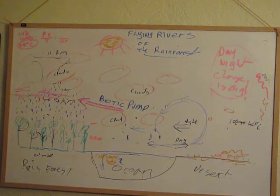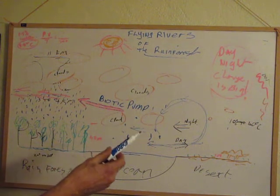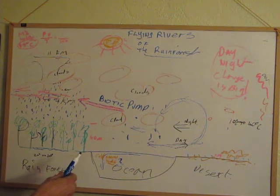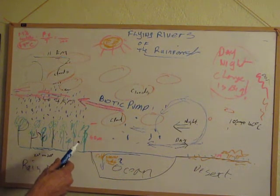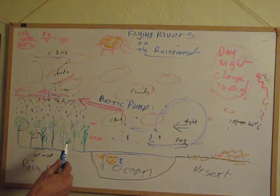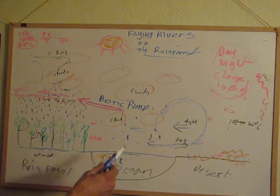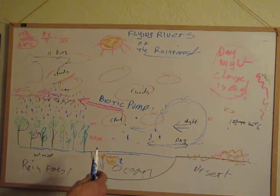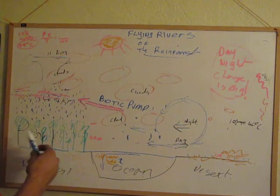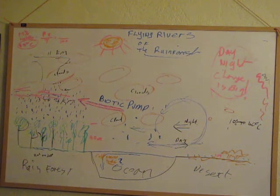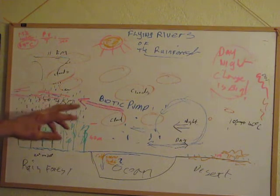Over the forest it's an entirely different thing. The rainforest, 40 metres high, has eight times the capacity to transpire water as the ocean has to evaporate. So over the forest, it's able to send water vapour up into the air eight times quicker than the ocean can. This means that over the forest during the day there's a little bit lower pressure than over the ocean.